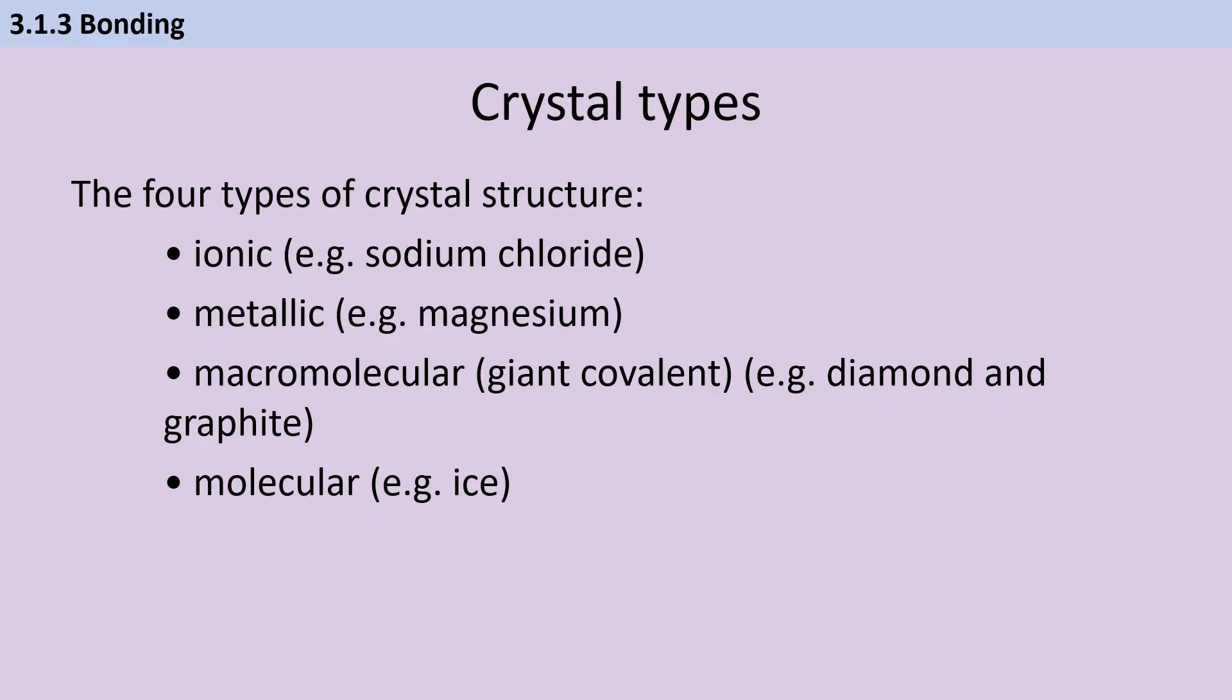In the bonding topic, we discuss four types of crystal structure, which is the overall structure of the substance. Is it ionic, like sodium chloride, metallic like magnesium, macromolecular, which you would have called giant covalent at GCSE, like diamond and graphite, or is it a simple molecular substance like ice?